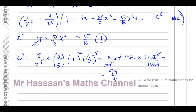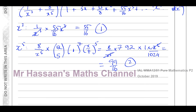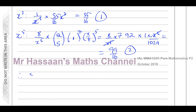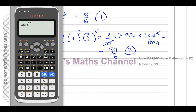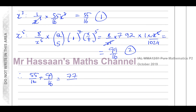Those are the only two terms independent of x, because everything else will either have x in the numerator or denominator and won't cancel. So we combine both constant contributions: 55/16 + 99/16 = 154/16, which simplifies to 77/8. The term independent of x in the expansion is 77/8.